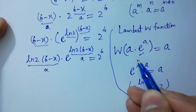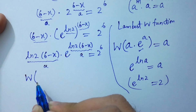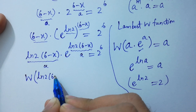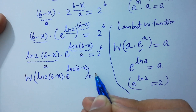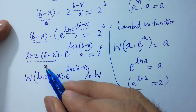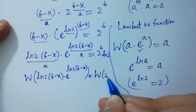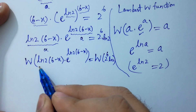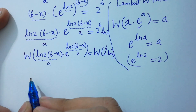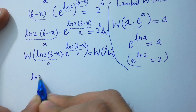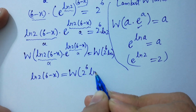You can see that (ln 2 times (6 minus x)) is a, and here it is also a. Applying the Lambert W function: W of (ln 2 times (6 minus x)) times e to the power (ln 2 times (6 minus x)) equals W of (2 to the power 6 times natural log 2). Since W(a times e to the power a) equals a, the left side becomes natural log 2 times (6 minus x), and the right side remains W of (2 to the power 6 times natural log 2).